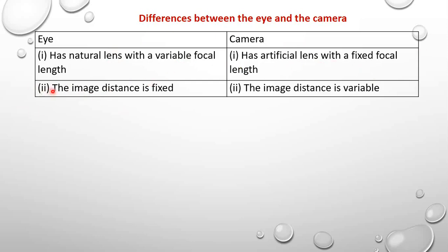Another difference is that for the camera the image distance is fixed, while for the eye the image distance is variable. Let's also look at what we call accommodation. Accommodation is the ability of the eye to focus an image of an object by altering the focal length of the lens.